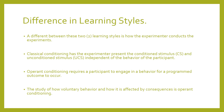There is a difference between classical and operant conditioning. In classical conditioning, the experimenter presents the conditioned stimulus and unconditioned stimulus independent of the behavior of the participant. Operant conditioning requires that the participant engage in a behavior for a programmed outcome to occur. Classical conditioning involves more involuntary behavior — we're training the animal or person to react a certain way. Operant conditioning is the opposite. The animal learns on its own free will that it needs to perform a behavior to receive food or care.